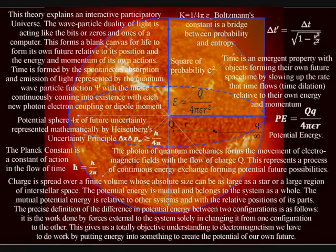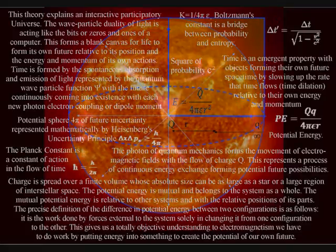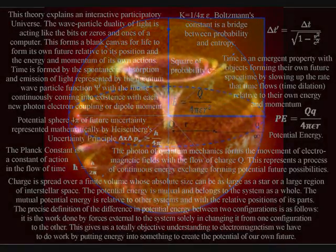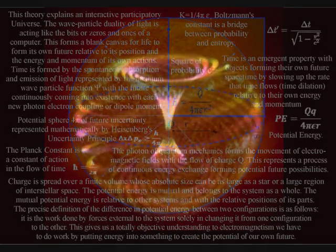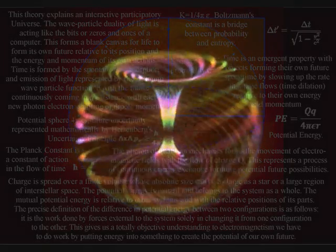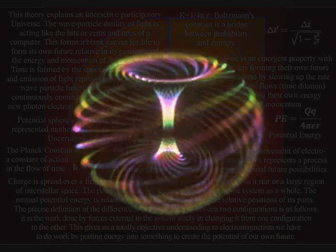Mainstream physics believes our sun is powered by nuclear fusion, providing an outward pressure that has to be balanced by the inward force of gravity. But would nature use such a complicated process as nuclear fusion when there is a much simpler alternative?